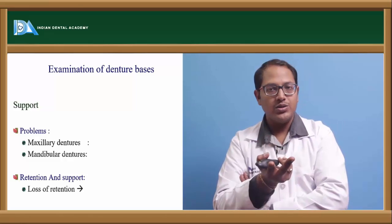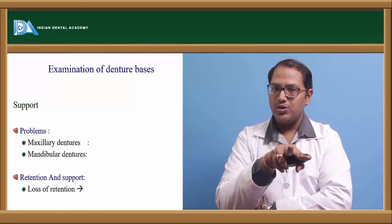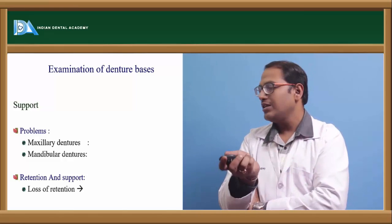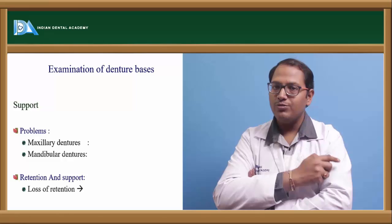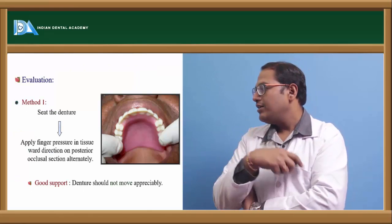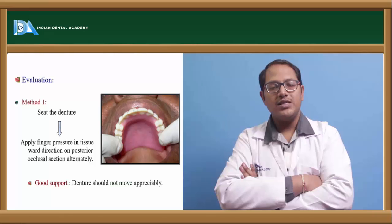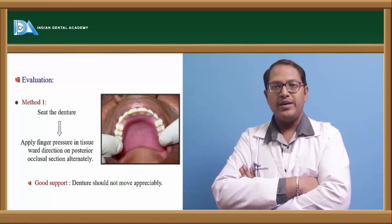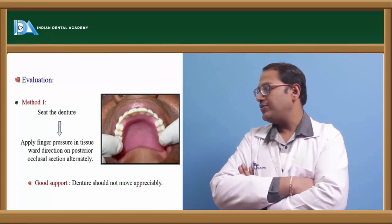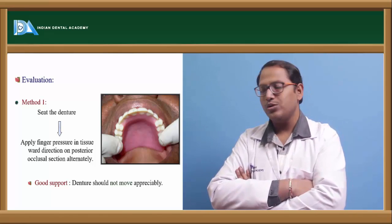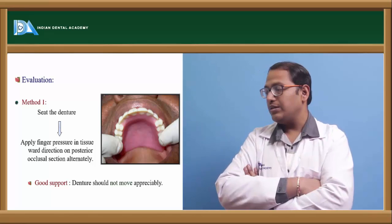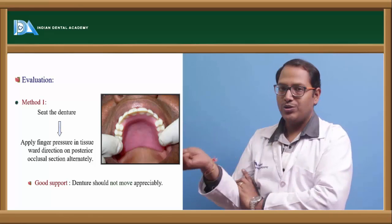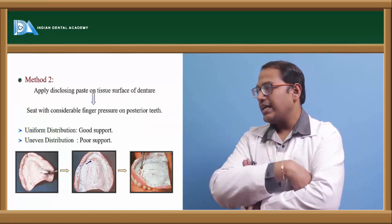Retention and support evaluation: using two fingers placed on one side, check if there is any lifting of the denture. If there is any loss of retention, we should proceed with relining and rebasing. The first method is the seat method — seat the denture, apply firm pressure in the posterior occlusal part. If it does not move, it has good support; if it moves, it has bad support and must be rectified.